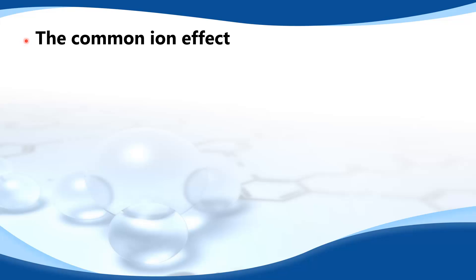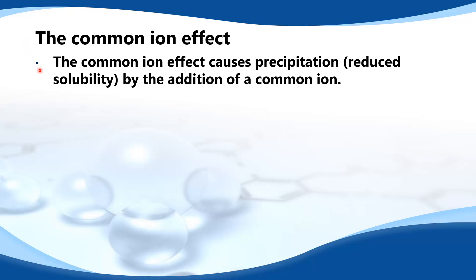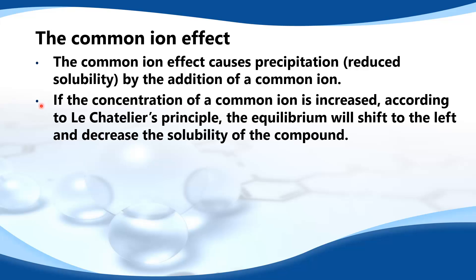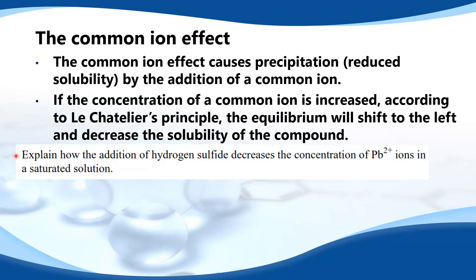The common ion effect causes precipitation or reduced solubility by the addition of a common ion. If the concentration of a common ion is increased, according to Le Chatelier's principle, the equilibrium will shift to the left and decrease the solubility of the compound. So let's look at an example.